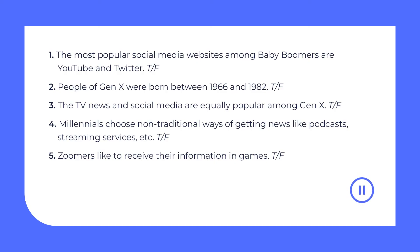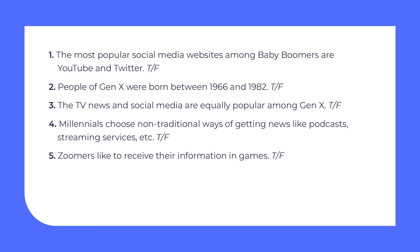Do you agree with the information in the text? Well, I hope so. Let's practice a little. There is a task on the screen. Pause the video, read the statements, and choose whether they are true or false. Are you ready to check? Let's do it! 1. The most popular social media websites among baby boomers are YouTube and Twitter — False. 2. People of Gen X were born between 1966 and 1982 — True. 3. The TV news and social media are equally popular among Gen X — True. 4. Millennials choose non-traditional ways of getting news like podcasts, streaming services, etc. — True. 5. Zoomers like to receive their information in games — False. They prefer to receive the news from social media.